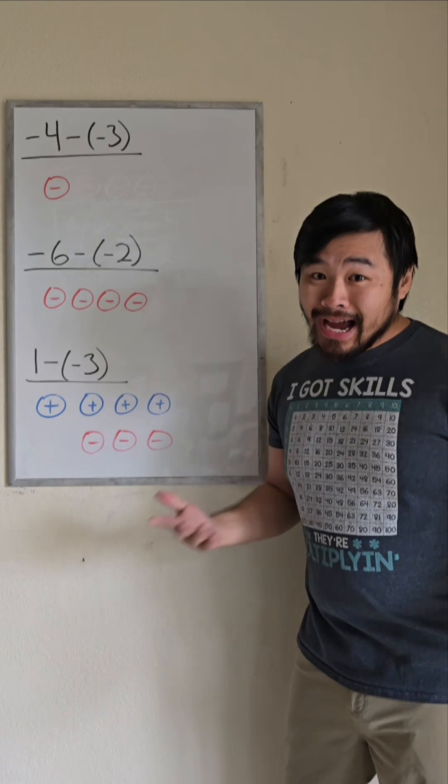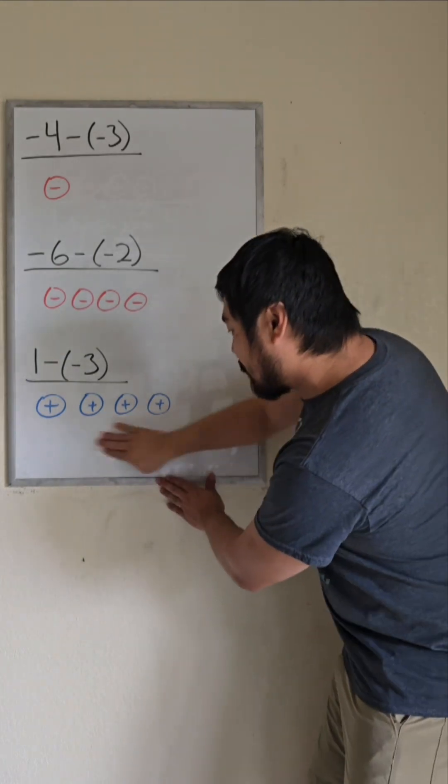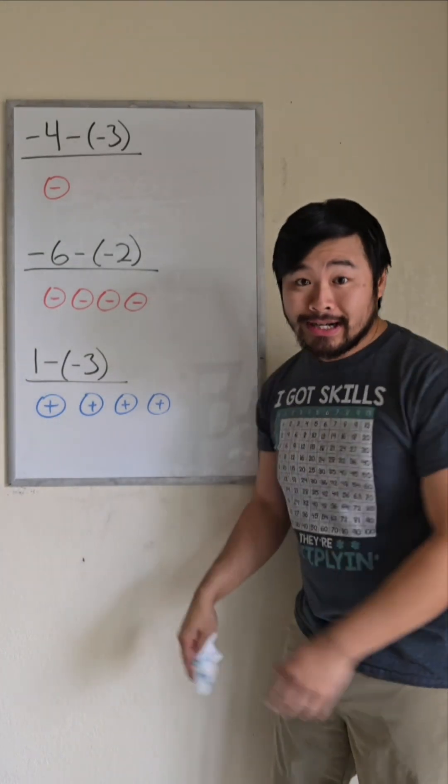but with this representation of 1, I can take away negative 3. And when I do that, I see that the answer is 4.